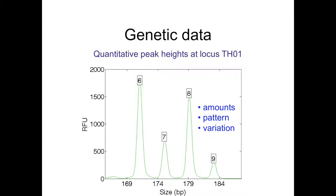The starting point for scientific analysis with Bayes is the data, and here that's STR genetic data — quantitative peak heights shown at locus FGA 1. There's a pattern where taller peaks appear at 6 and 8, and lower peaks at 7 and 9. What's important is that you want to use all of the data: the amounts of DNA matter, the peak heights matter, the pattern of highs and lows matter, and the variation is also important in modeling the variance parameters, of which there can be dozens.